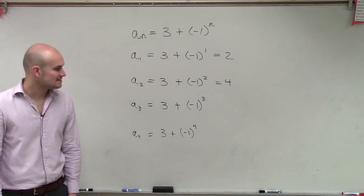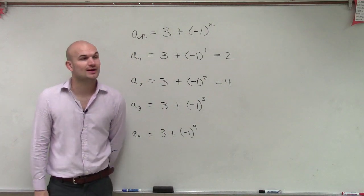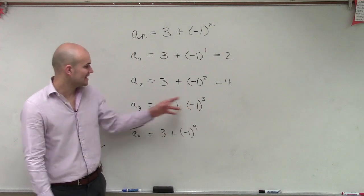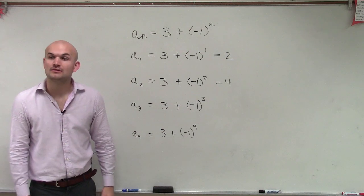Now let's look at negative 1 cubed. So negative 1 times negative 1 times negative 1 is negative 1. Negative 1 plus 3 is 2.